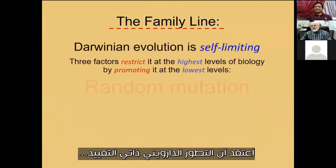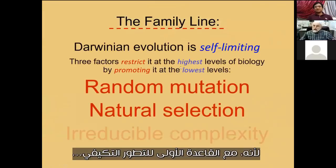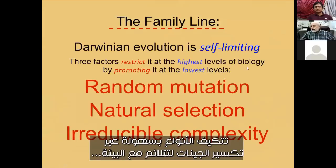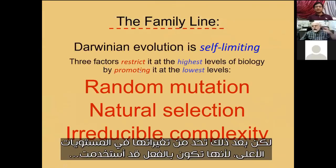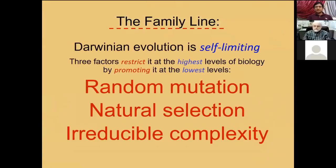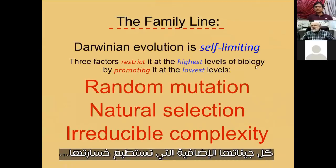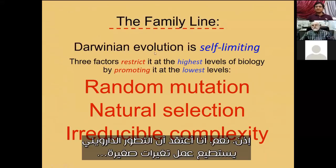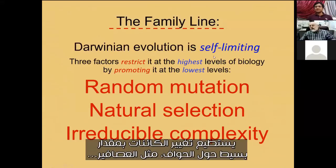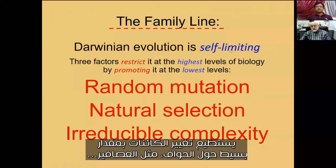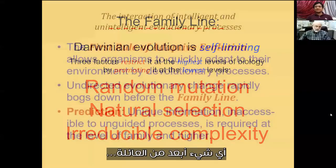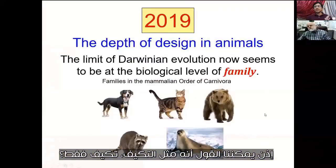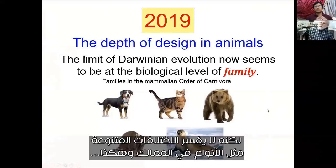So I call that the family line. I think Darwinian evolution is self-limiting because with the first rule of adaptive evolution, species adapt easily by breaking genes to fit into the environment. But then that restricts their change at higher levels because they've already used up all of their extra genes that they could lose. And if they lose much else, they'll be in big trouble. So Darwinian evolution can do small changes, can change creatures a little bit around the edges like the finches, but it can't make anything new beyond the family. It's like adaptation only — it doesn't explain the variety of different types, kingdoms, and so on.